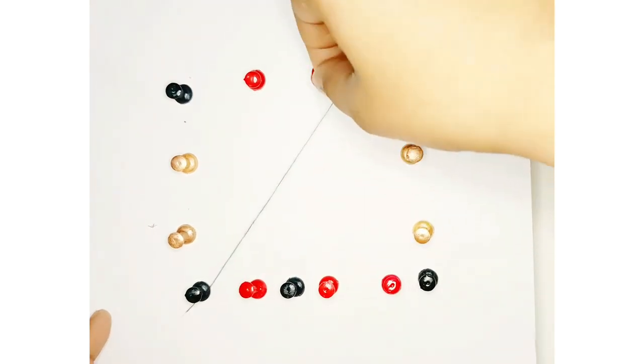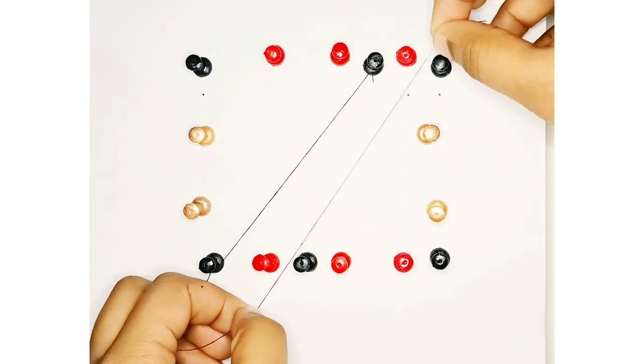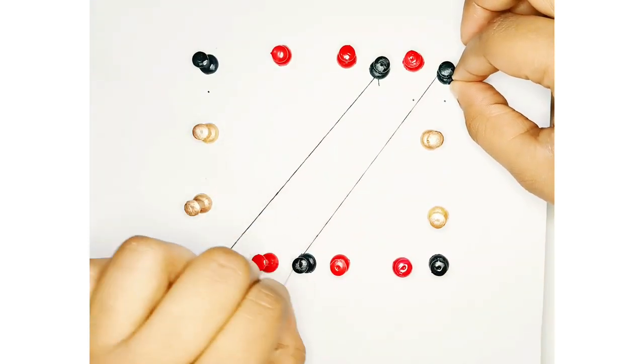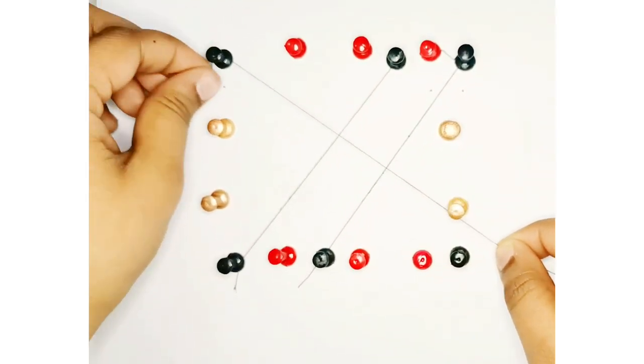Now take some pieces of thread or yarn and tie them securely around the pins. Note that there should not be any slack in the threads.